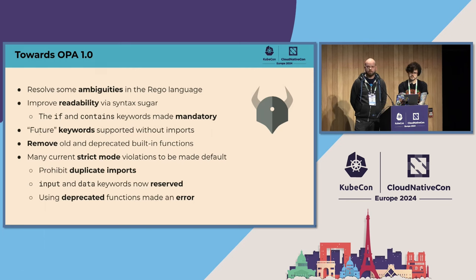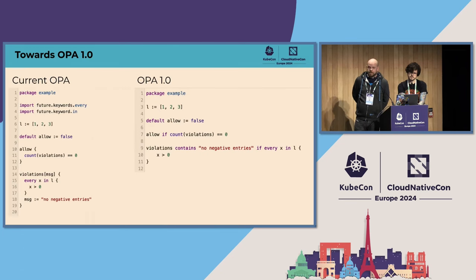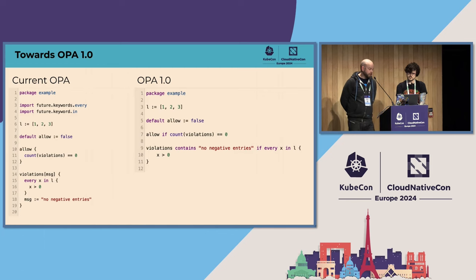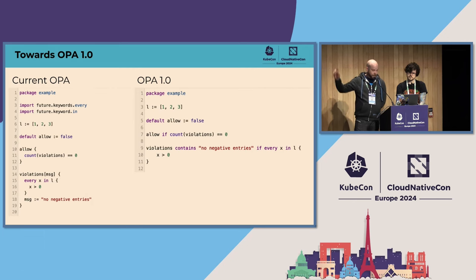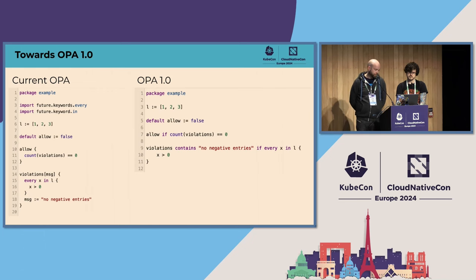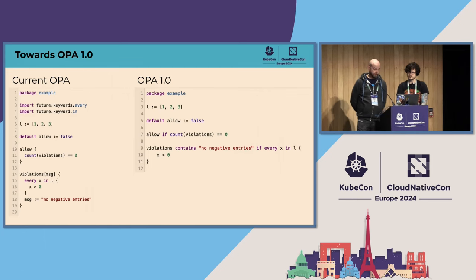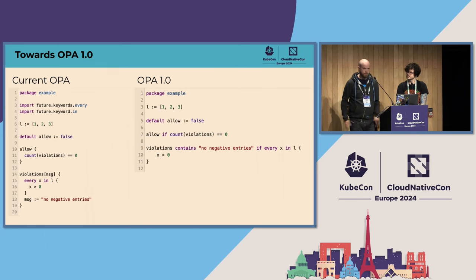Some built-in functions that are no longer relevant will be removed — if you run OPA with strict mode today you basically have this already. Things like duplicate imports, using `input` or `data` as variable names, or using deprecated functions should affect very few of you. To provide an example: following the package declaration, future keyword imports are no longer necessary. The `allow` rule can now be written as a one-liner using `if` without curly braces. The `violations` rule, which builds a set of strings, now uses the `contains` keyword — a more compact, readable syntax.